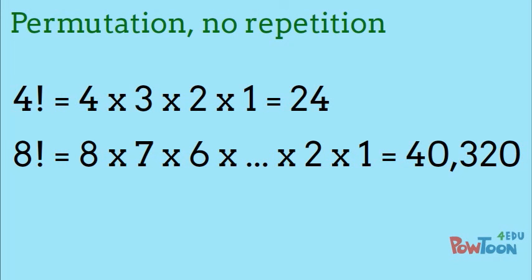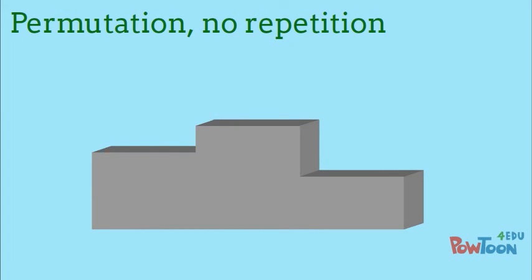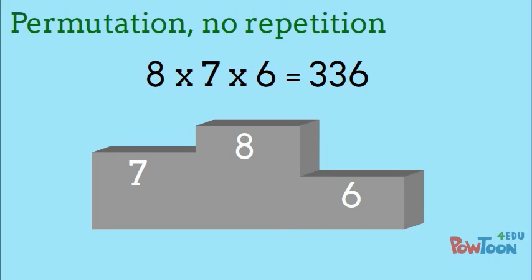Now let's ask a different question. How many possible podium arrangements are there? Now we only care about the first 3 runners. We follow the same pattern of 8 times 7 times 6, which yields 336 possible podium crews.